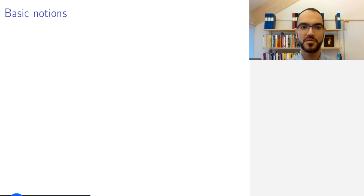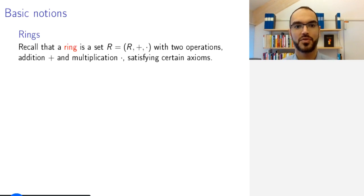The first basic notion and the main notion from algebra is that of a ring. Remember that a ring is a set R with two operations, addition and multiplication, that are compatible with each other in reasonable ways and satisfy axioms that you would expect. With respect to addition this is an abelian group. Addition is commutative.